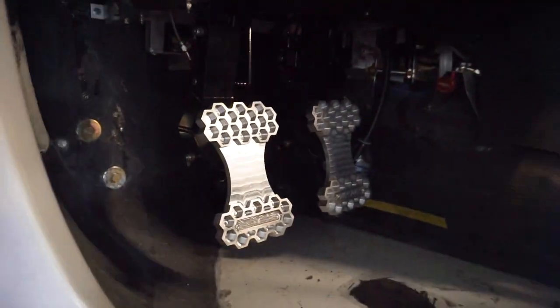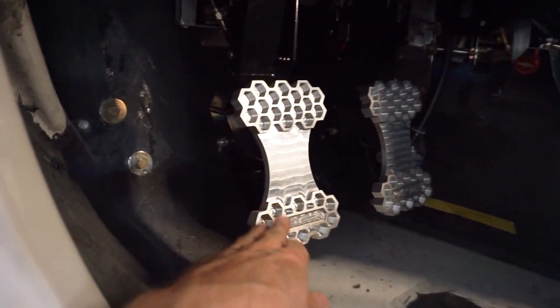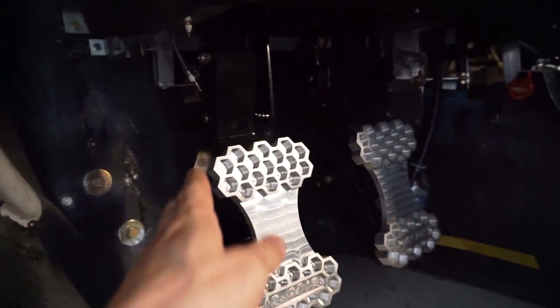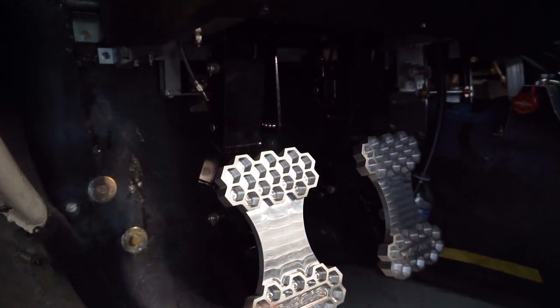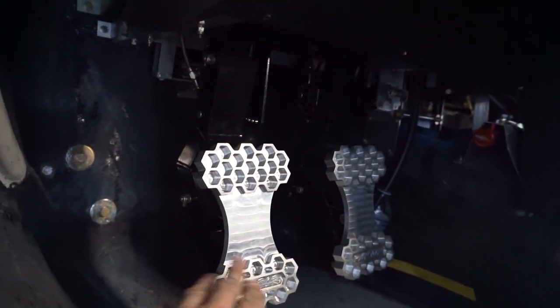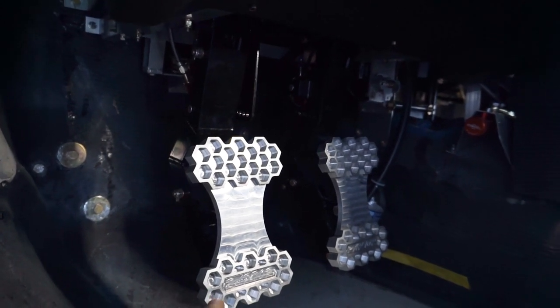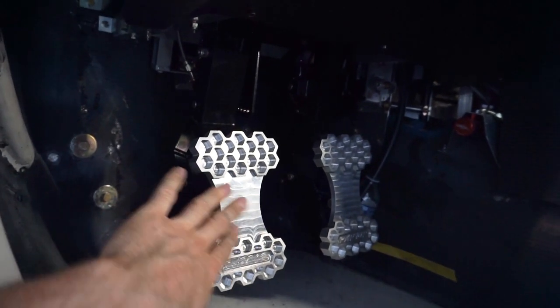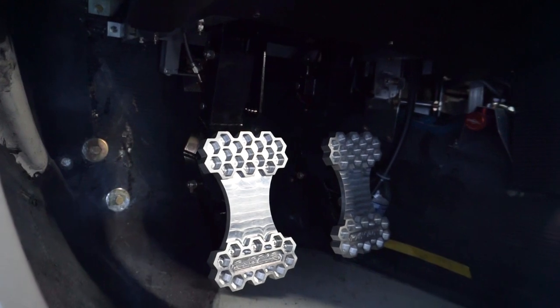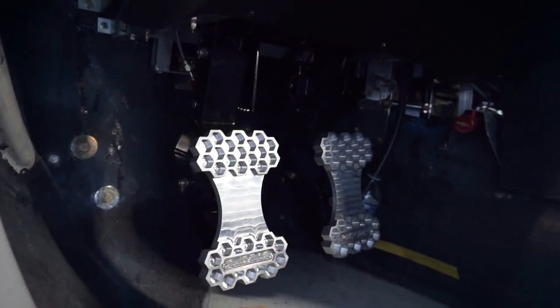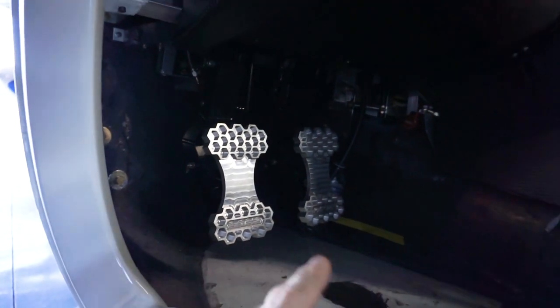The rudder pedals are adjustable. It's a bit difficult to see, but I have pins in here, shown in previous videos, that allow you to adjust the rudder pedals for about six inches of travel. If you have longer legs you can adjust them further back, and if you have shorter legs you can bring them forward.